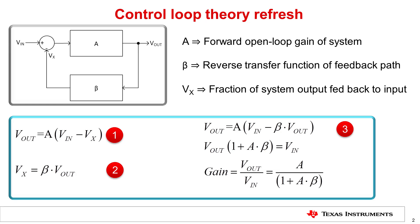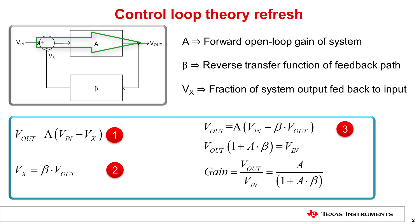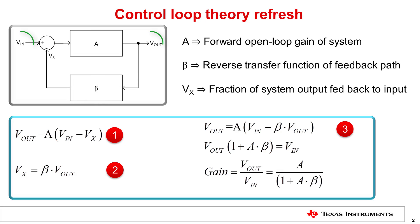We will begin with a brief refresh of control loop theory. The generic design of a negative feedback loop for a control system is shown here. A represents the system's open loop gain in the forward direction, while beta represents the reverse transfer function of the feedback path. Vin and Vout are the system's inputs and outputs respectively, while Vx is the fraction of the system's output that is fed back to its input.